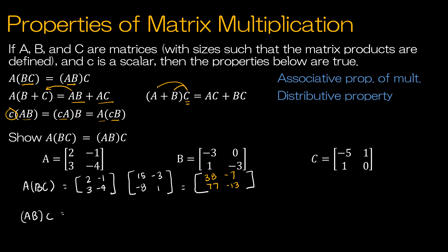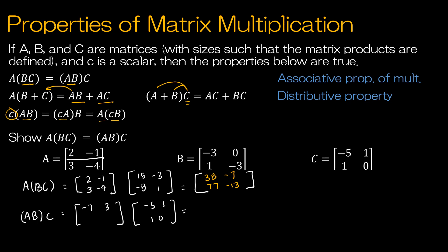Now I'll take A times B and multiply by C. Computing A times B — first row, turning it into a column: negative 6 plus negative 1 is negative 7, and 0 plus 3 is 3. Now the other row, 3, negative 4: negative 9 plus negative 4 is negative 13, and 0 plus 12 is 12.